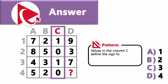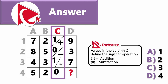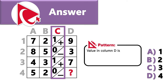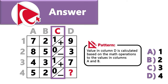The value 1 is equivalent to addition, and value 0 is equivalent to subtraction. Once you know this rule, you can calculate the value in column D based on the math operations applied to values in columns A and B.